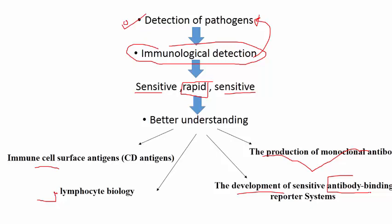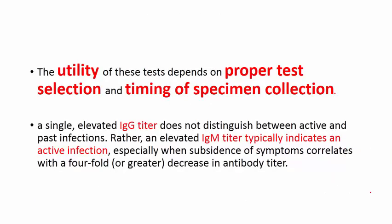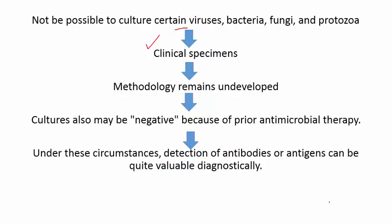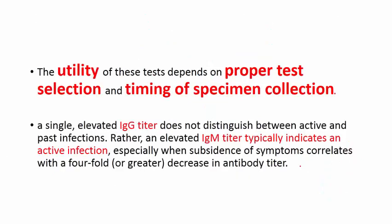Overall, clinical immunology gives us this idea. For analyzing the production of antibodies or antigen detection, care must be taken regarding which kind of test we want to perform. The utility of clinical immunology depends on the proper test selection by the doctor, and the timing of the specimen collection. For example, if you have an infection from some bacteria and you went for antibody detection...